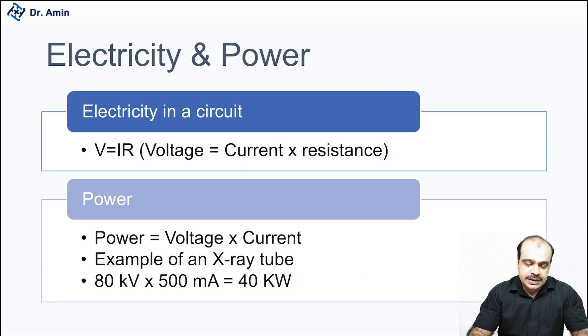Then we have two more things to go, and one is electricity and power. Electricity in a circuit is V = IR, voltage equals current times resistance. This will be used very rarely in our further discussion process, just to make sure you remember these values. And then we have power. Power is voltage times current. For example, if we want to calculate the power of an x-ray tube which is operating at 80 kilovolts, and the current flowing through the tube is 500 milliampere, the total power of that tube is going to be 40 kilowatts.